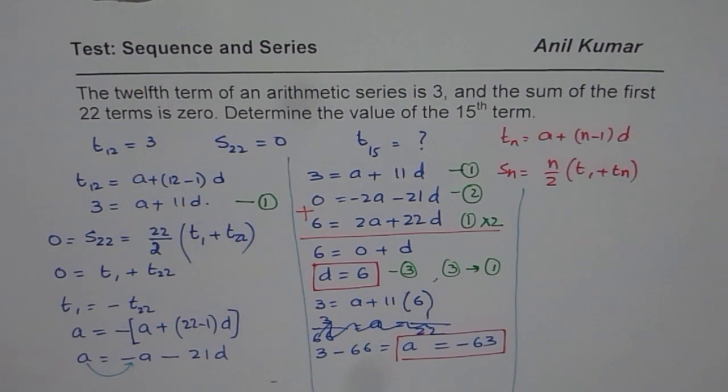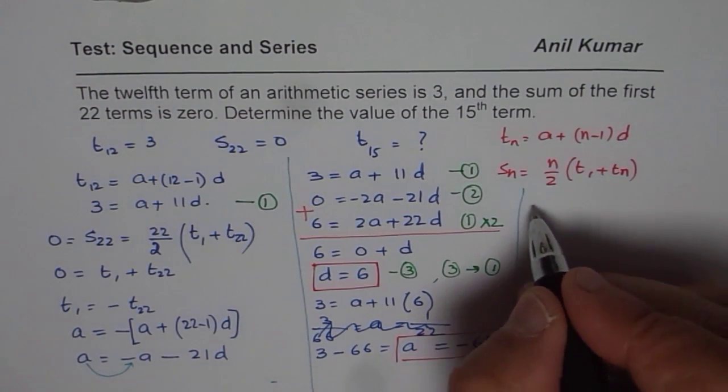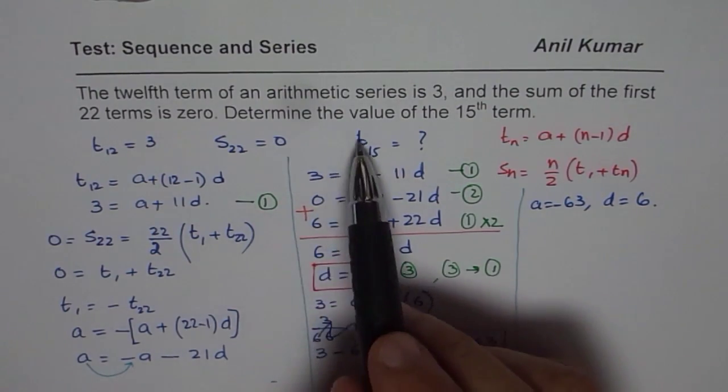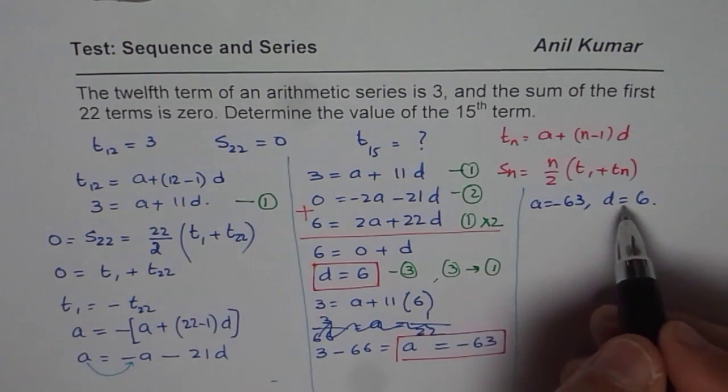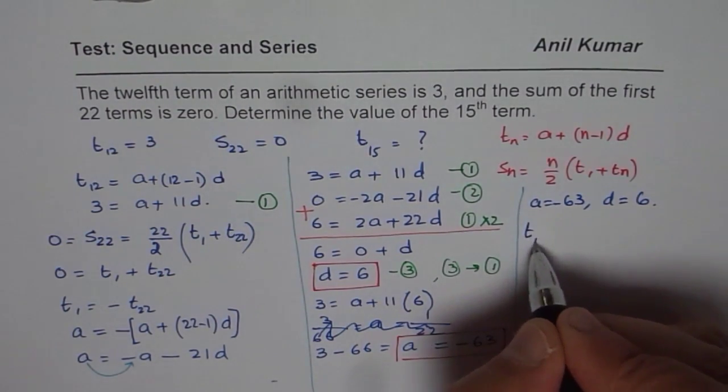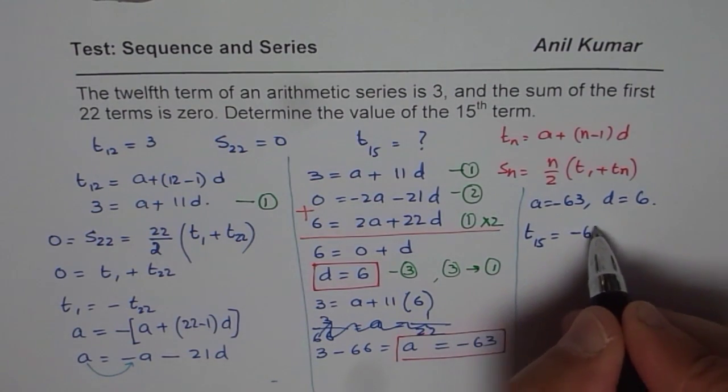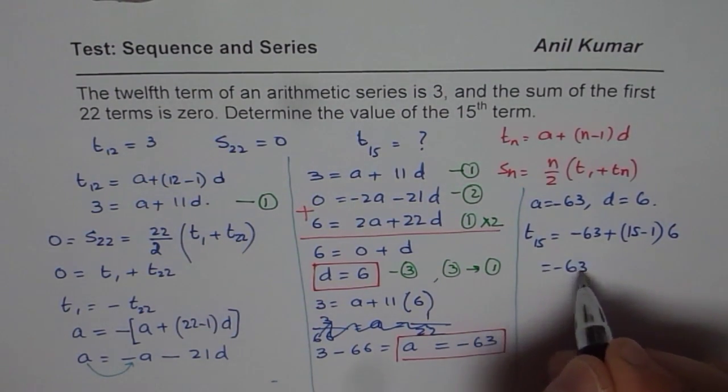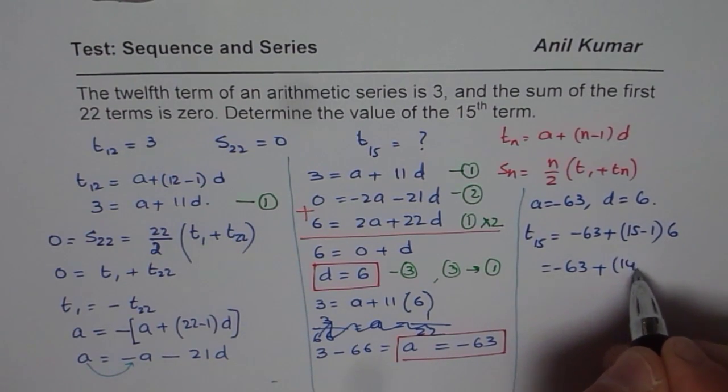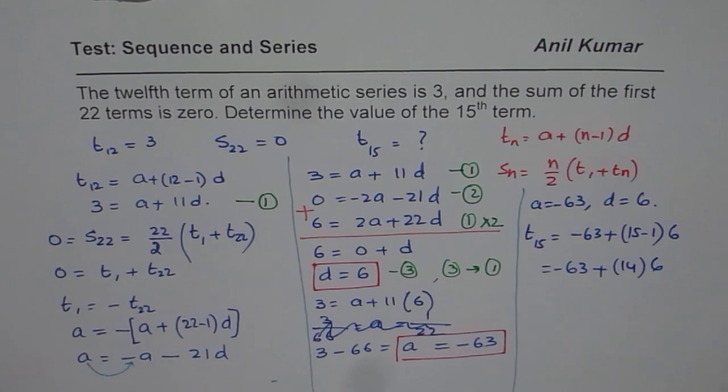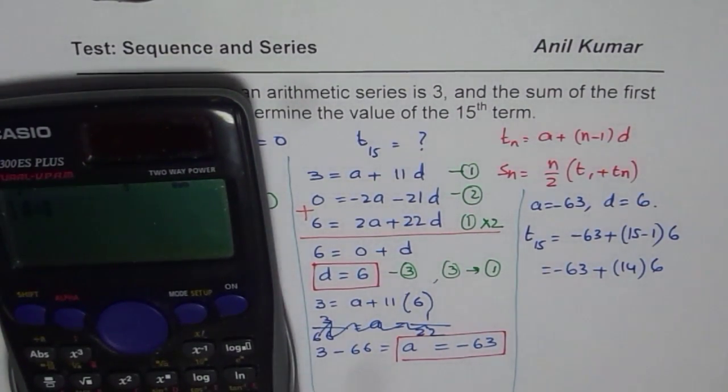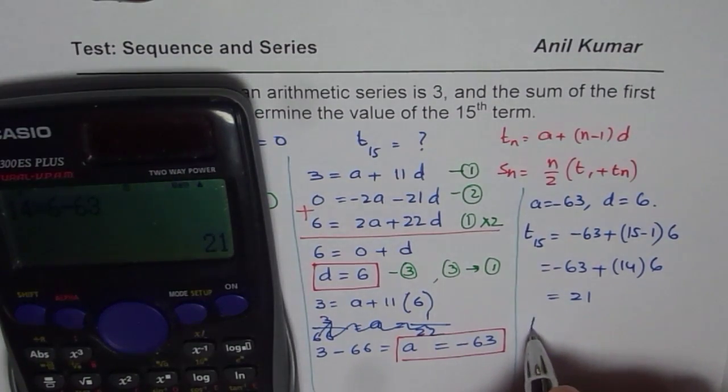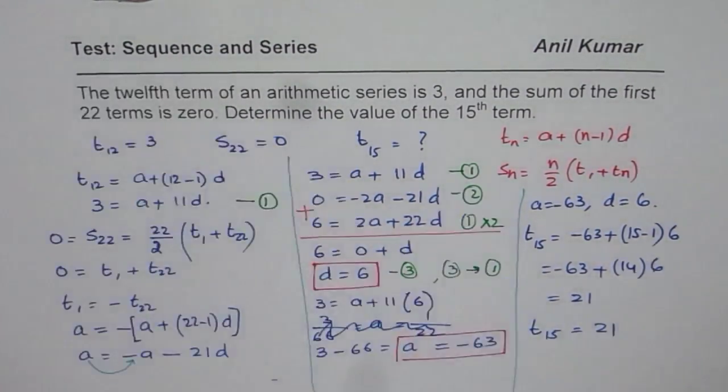So what we know now is A is minus 63, and D equals 6, and we need to find T15. So we can now substitute all these values and get T15. So we get T15 equals A is minus 63, plus 15 minus 1 times D, which is 6. So we get minus 63 plus 14 times 6. So let us use the calculator now and find the answer. So we have 14 times 6 minus 63 equals 21. So we get 21 as T15. So T15 equals 21. So that becomes our answer.